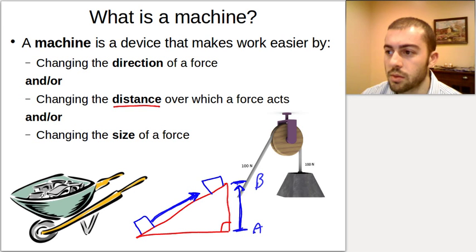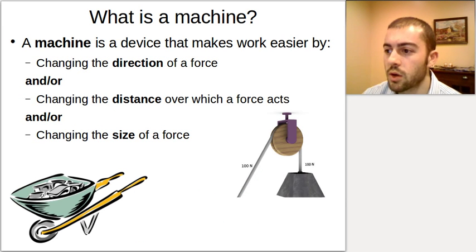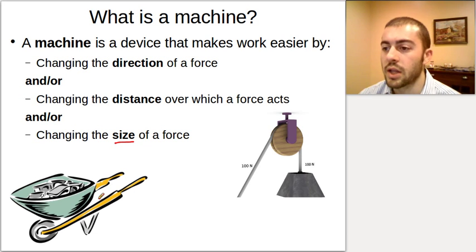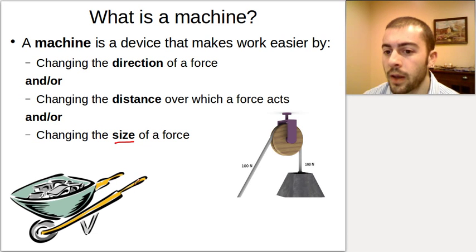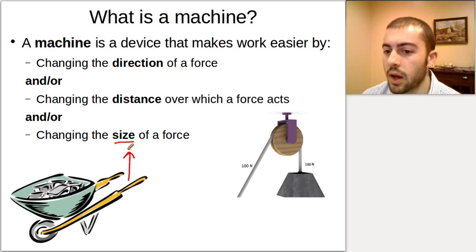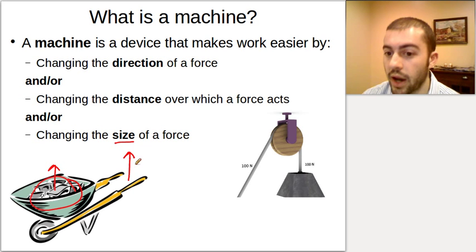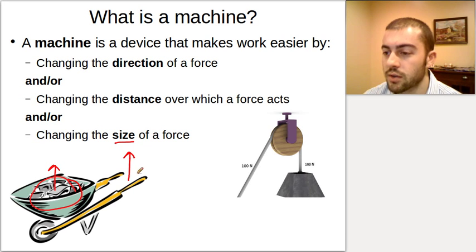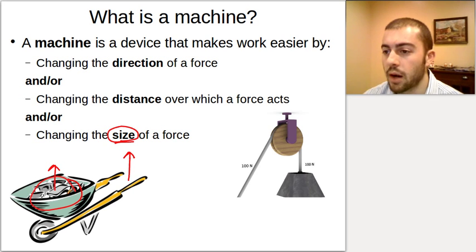A machine can also change the size of a force. A wheelbarrow is a good example — it takes less force to lift a load using the wheelbarrow handles than it would to lift that same load directly. So the wheelbarrow changes the size of our force: we put in a smaller input force and get out a bigger output force needed to lift a heavy object.